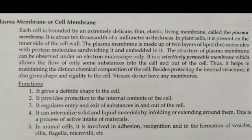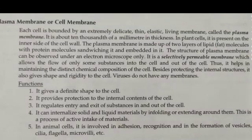Thus, the plasma membrane is known as the selectively permeable membrane. It helps in maintaining the distinct chemical composition of the cell. In terms of functions, it gives a definite shape to the cell and provides protection to the internal contents of the cell.